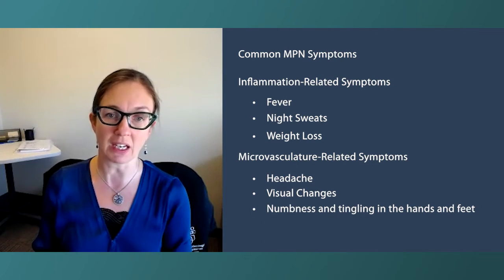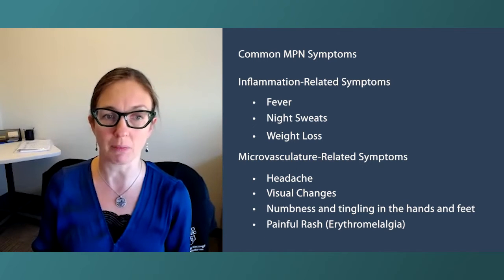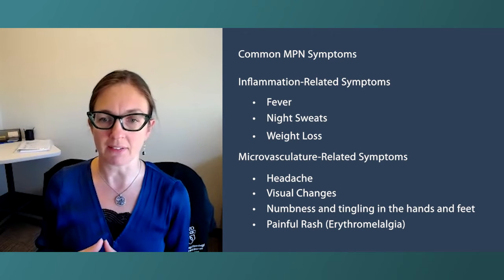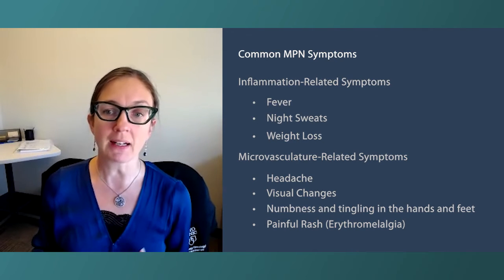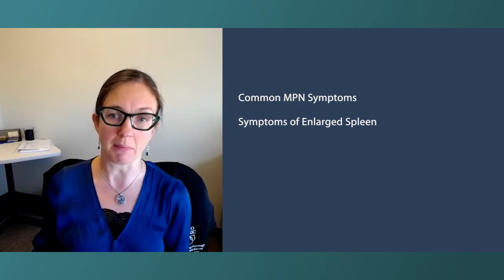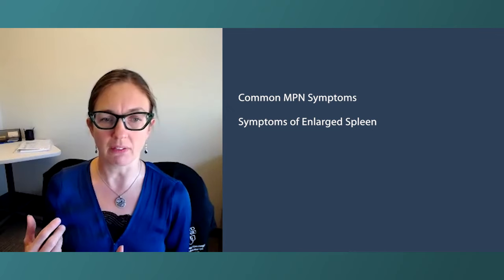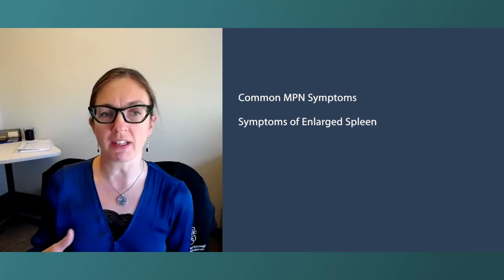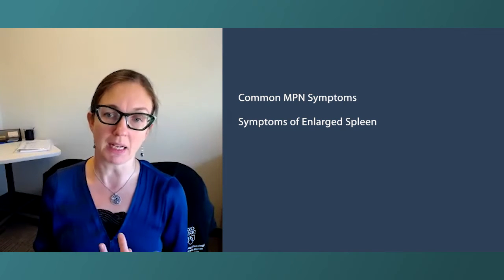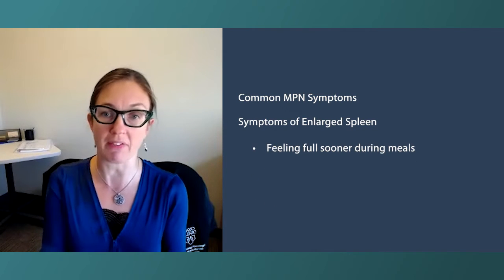Microvascular dysregulation can even cause a painful rash called erythromelalgia on the body — these are probably less appreciated side effects of the disease. Finally, there are spleen-related symptoms. The spleen sits in the left upper quadrant of the abdomen and is normally about 10 to 12 centimeters in length, but in patients with myeloproliferative diseases it can be enlarged. As a result, people can feel full early — eating only half a meal instead of a whole one.